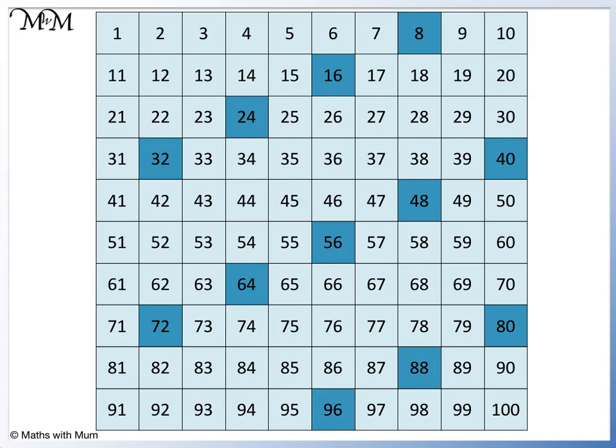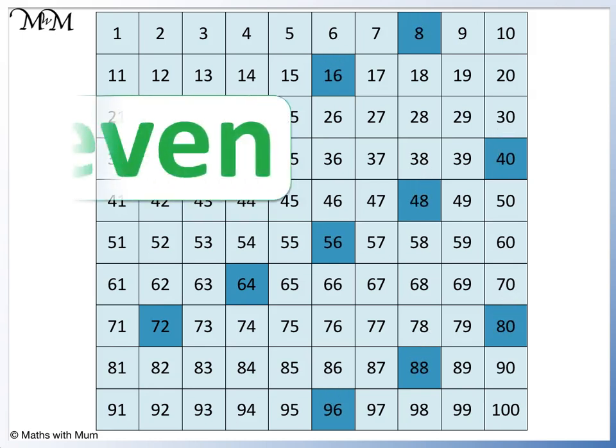You may have noticed a pattern. Each multiple of 8 ends in 2, 4, 6, 8, or 0, which means that they are all even.